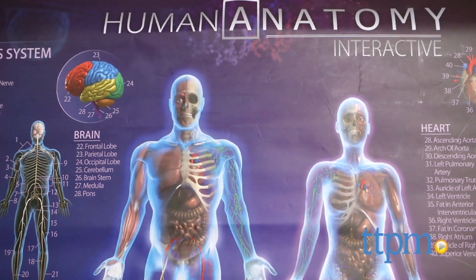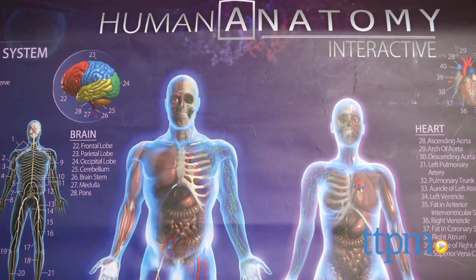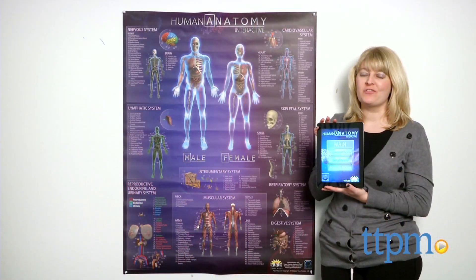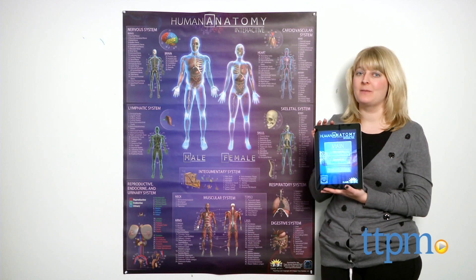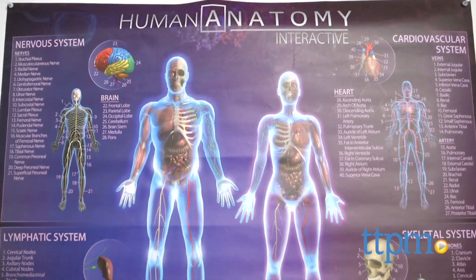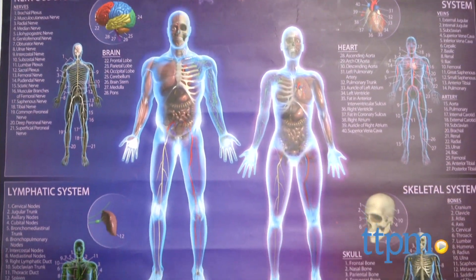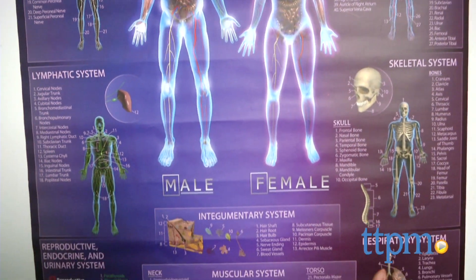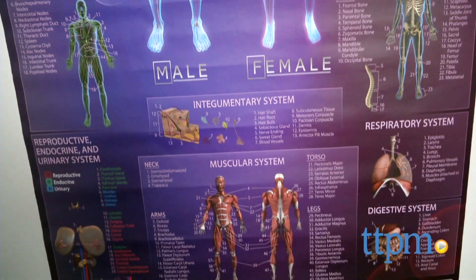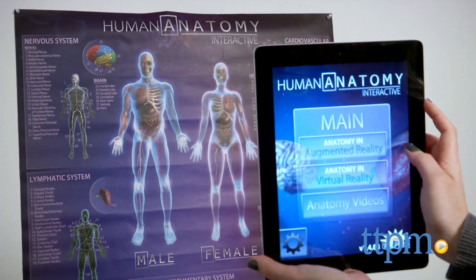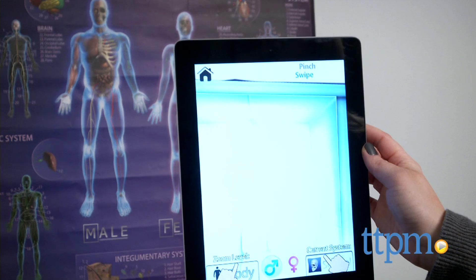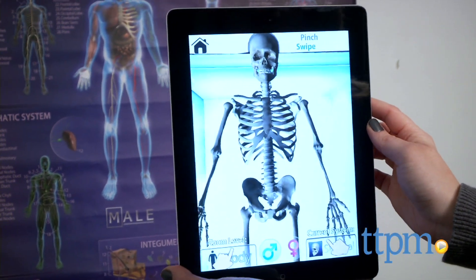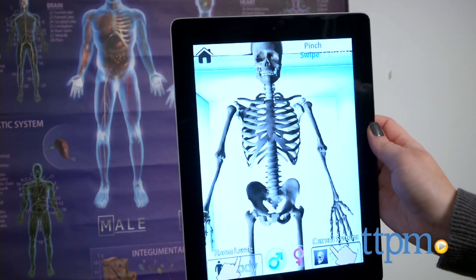Bring learning to life with this interactive poster. I'm Laurie from TTPM and this is the Human Anatomy Interactive 3D Chart from POPAR. This 32 inch by 42 inch poster allows kids to engage and learn through detailed 3D animations, educational videos, and informative facts when used with the free iOS and Android Human Anatomy Chart by POPAR app.